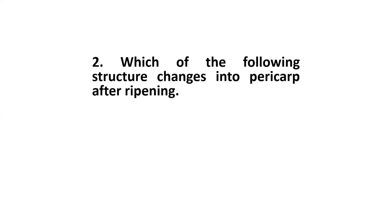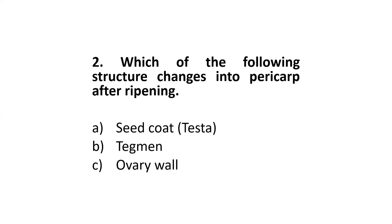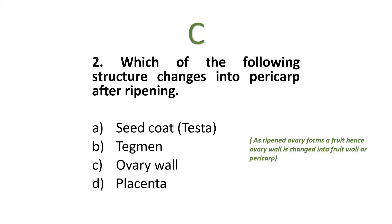Next: which of the following structures changes into pericarp after ripening — seed coat, testa, tegment, ovary wall, or placenta? The correct option is ovary wall, as the ripened ovary forms a fruit; hence ovary wall is changed into fruit wall or pericarp.